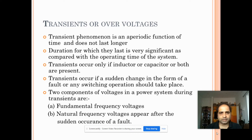Transients occur if the inductor or capacitor or both are present. In the presence of only resistive element the transients do not occur, whereas in the presence of inductor, capacitor or both of them the transients will be occurring every moment. Transients occur if a sudden change in the form of a fault or any switching operation should take place. Transients or over voltages do occur whenever the fault is occurring or the switching operation is taking place.